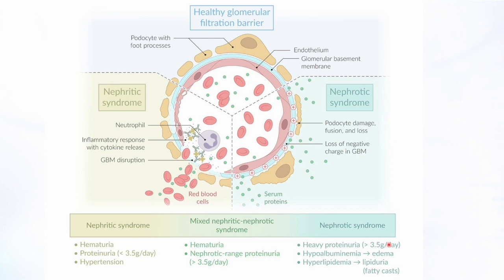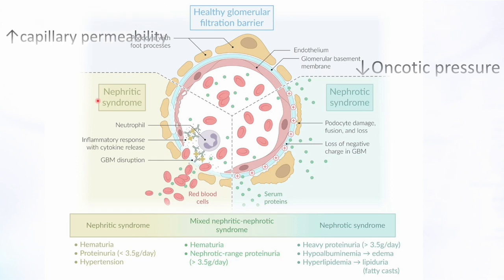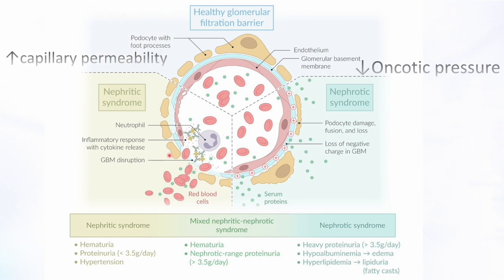Heavy proteinuria causes severe edema because proteins are responsible for oncotic pressure. The mechanism of edema in nephrotic syndrome is decreased oncotic pressure due to massive proteinuria. In nephritic syndrome, there's still some edema but it's less severe — caused instead by increased capillary permeability. This is a distinction the USMLE can test you on: the mechanism of edema in each syndrome.